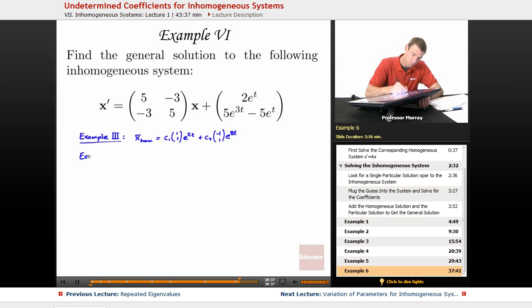In example 4, we focused on the e to the t terms on the right-hand side, so we looked at that and that, and we figured out a particular solution that produced those two terms, and that particular solution was (1, 2) e to the t. That was using undetermined coefficients. Very important here, there's no c's in here.